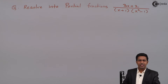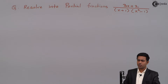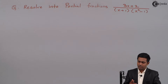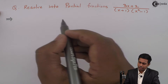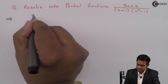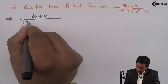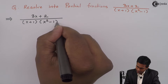Hello everyone. In this problem we have to find the partial fraction of (3x + 2) upon (x + 1) into (x² - 1). To get the partial fraction, first we'll write down the given fraction: (3x + 2) upon (x + 1) into (x² - 1).